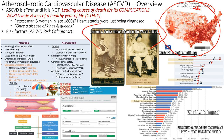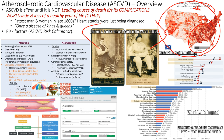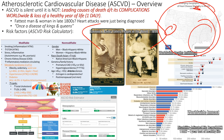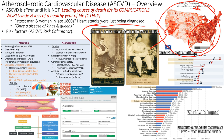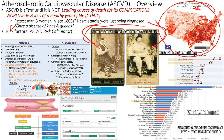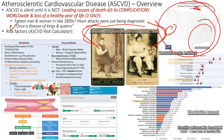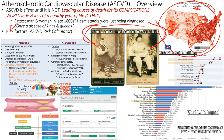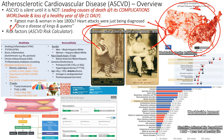This map shows ASCVD mortality by region — dark red means high mortality. Populated southern areas show up prominently, likely related to diet. Heart attacks are a relatively new epidemic over the last 150 years. It was once a disease of the wealthy, who could eat whatever they wanted.